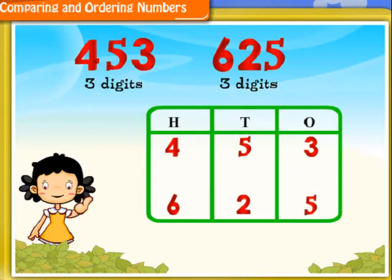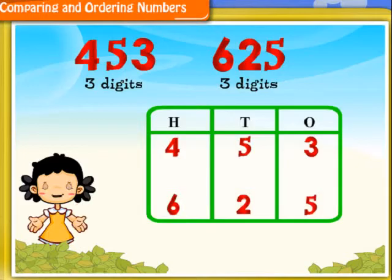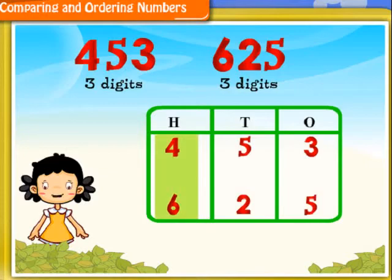Here it is. I can see from the table that this number has digit 4 under the hundreds column, whereas this number has digit 6. That is, the number 453 contains four hundreds, whereas 625 contains six hundreds. Therefore, 625 is greater than 453.